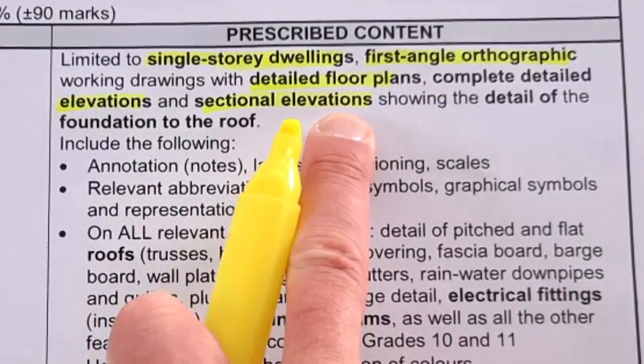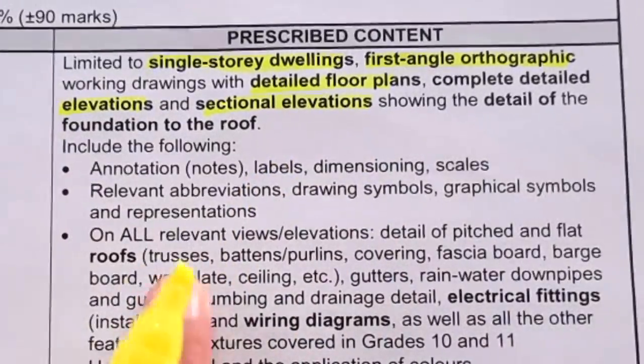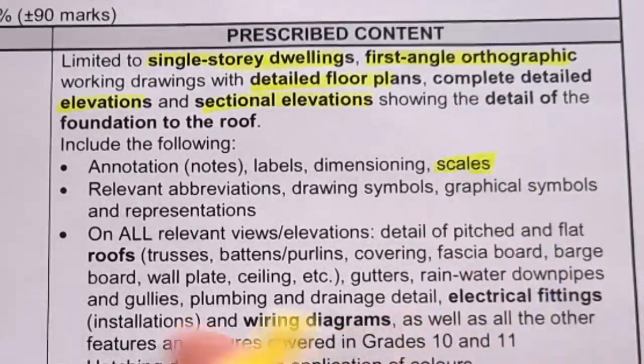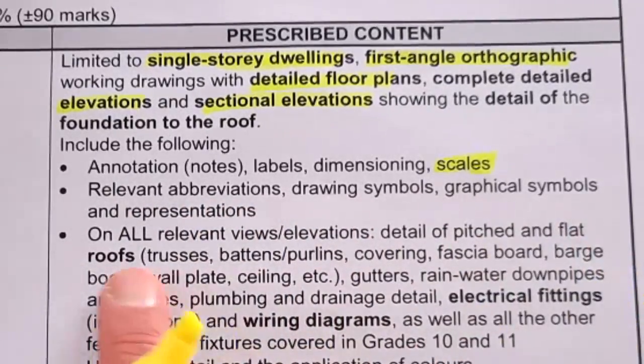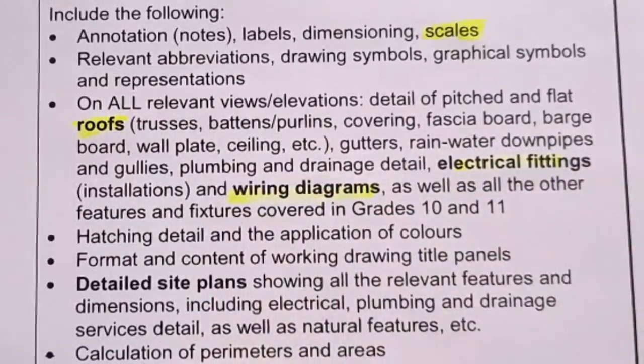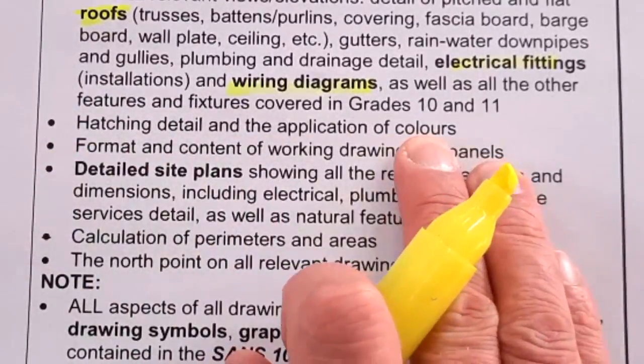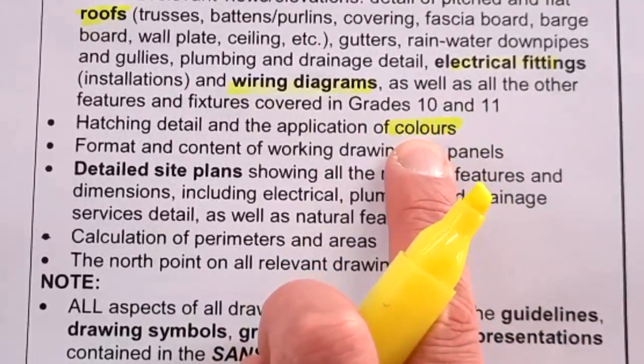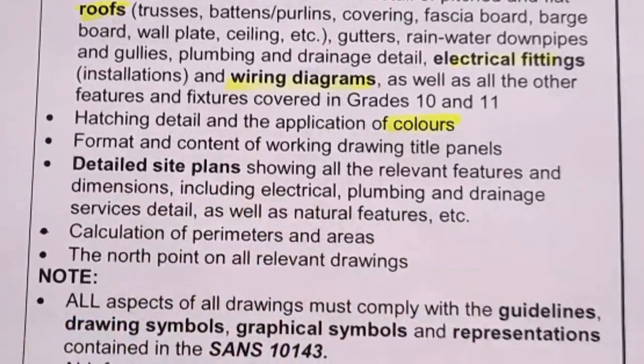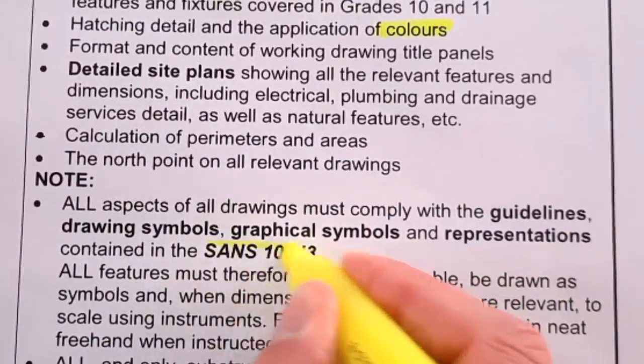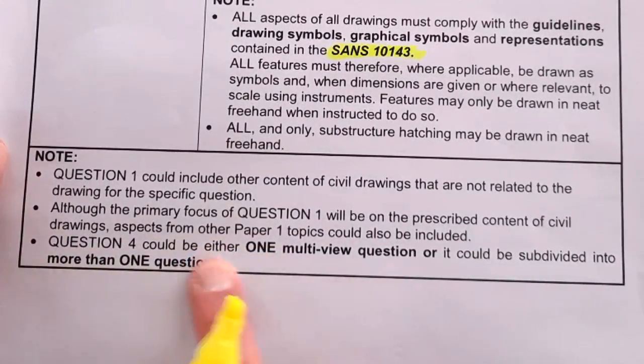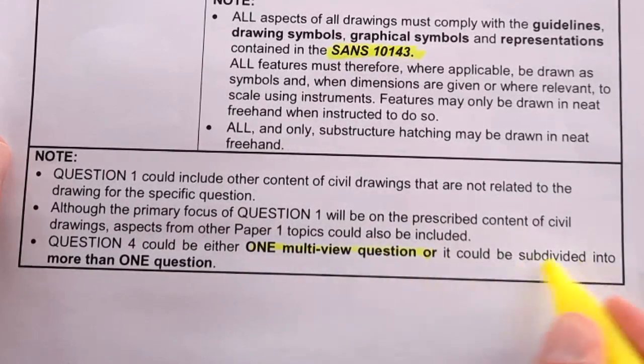You need to be able to draw detailed floor plans, detail elevations, and a sectional elevation that includes foundation walls and roof. Always in these drawings labels, dimensioning, scales are important. Relevant abbreviations, symbols, graphic symbols, all relevant views including roof details, electrical fittings and wiring diagrams, hatching detail, and site plans. Question four could be one multi-view question or subdivided into more than one question.